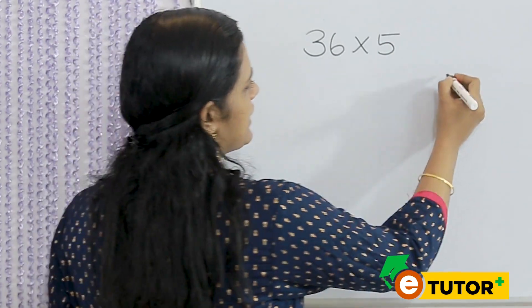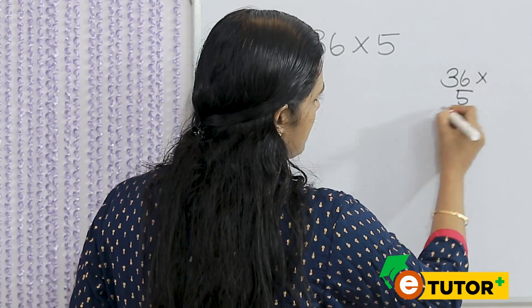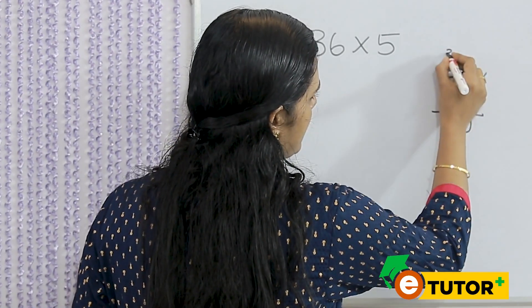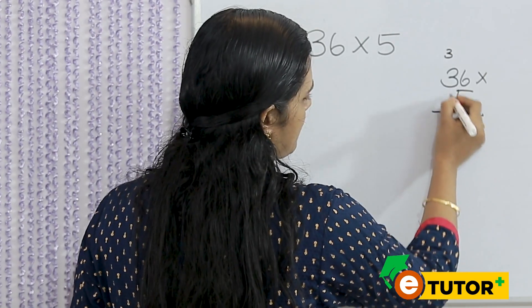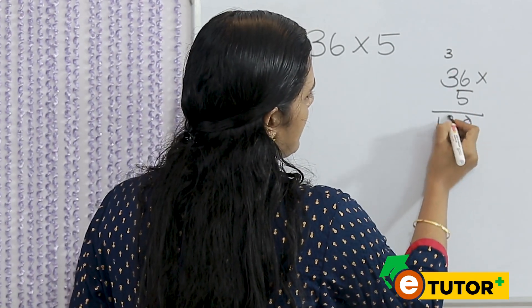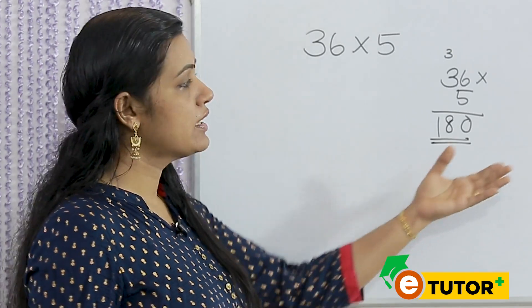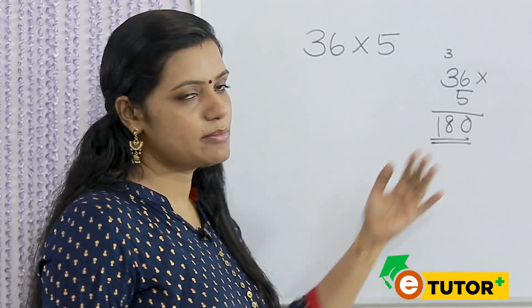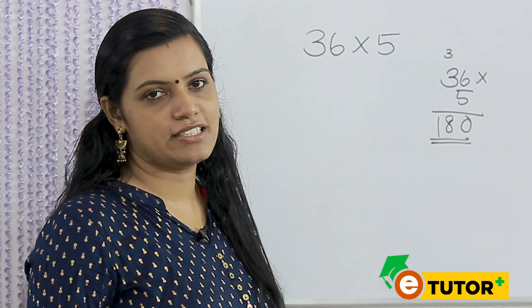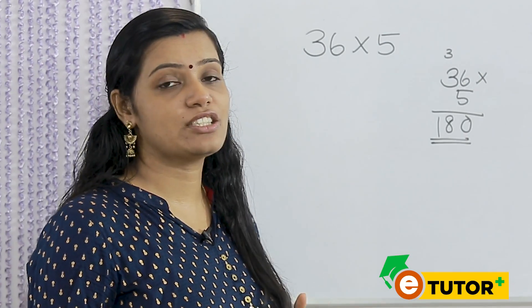How do we do it? 36 into 5. 6 into 5 is 30, carry 3. 5 into 3 is 15, plus 3 is 18. So 180 is our answer. We will multiply with 36 in 3 steps, but it is only one step.